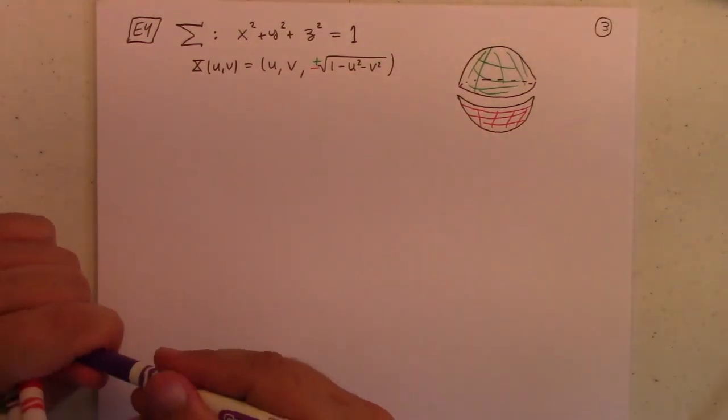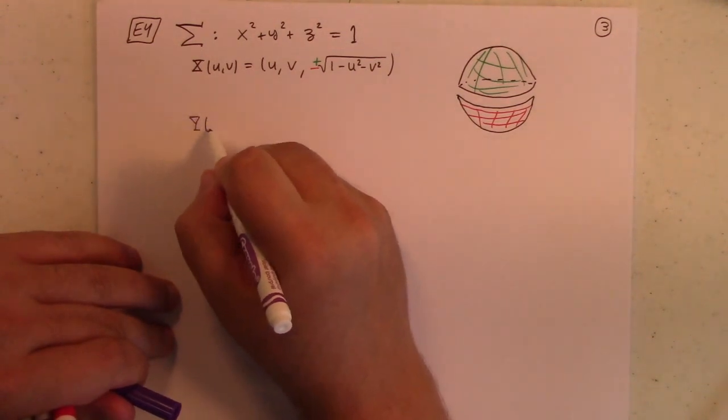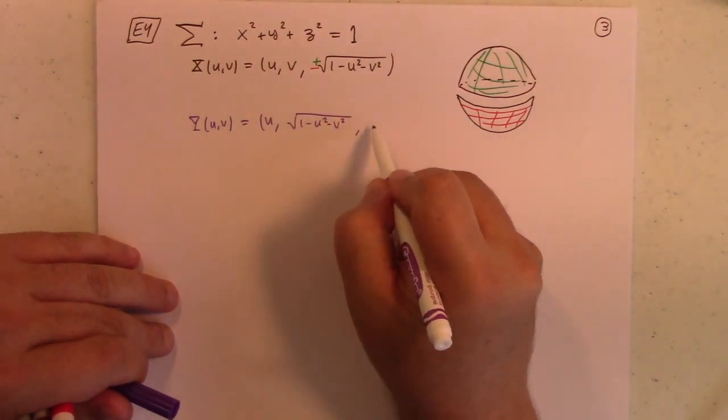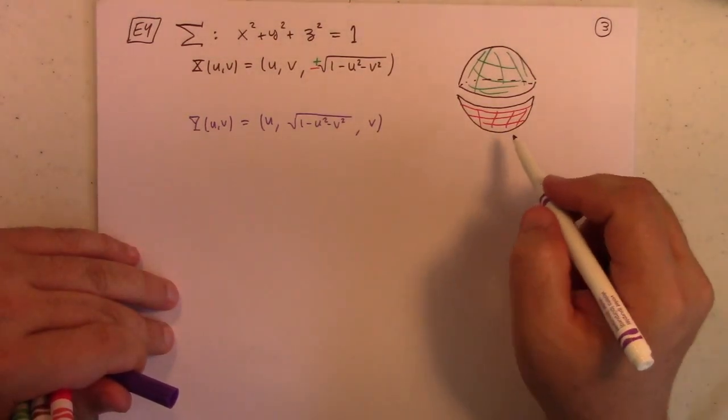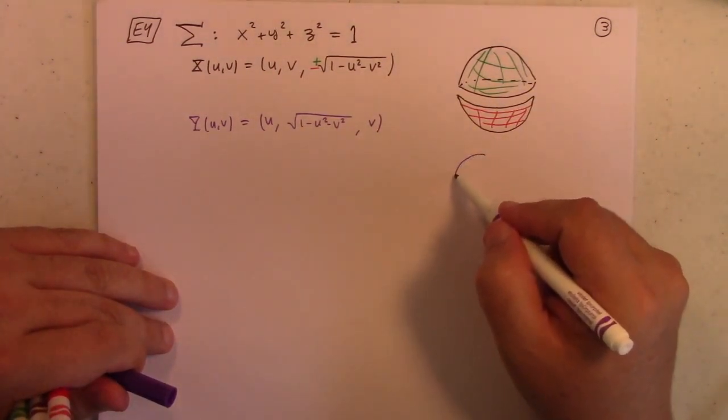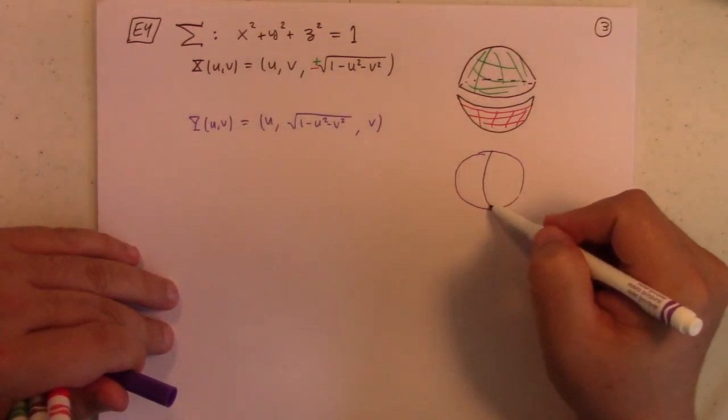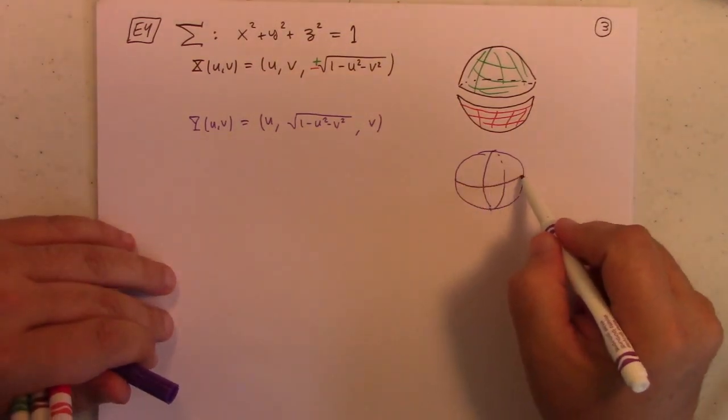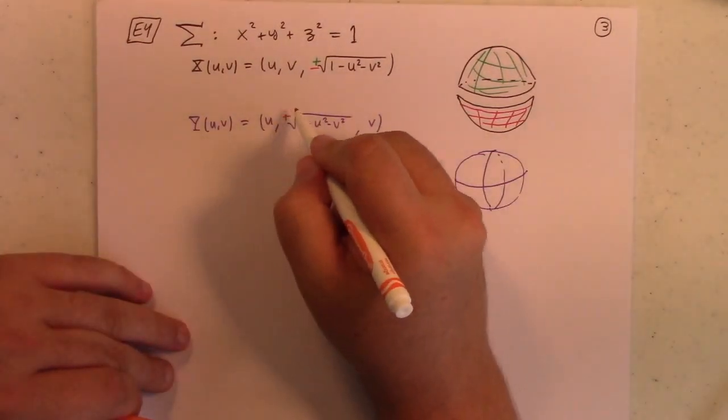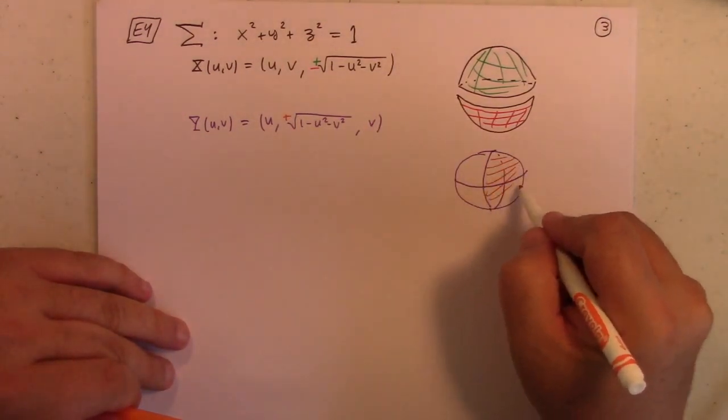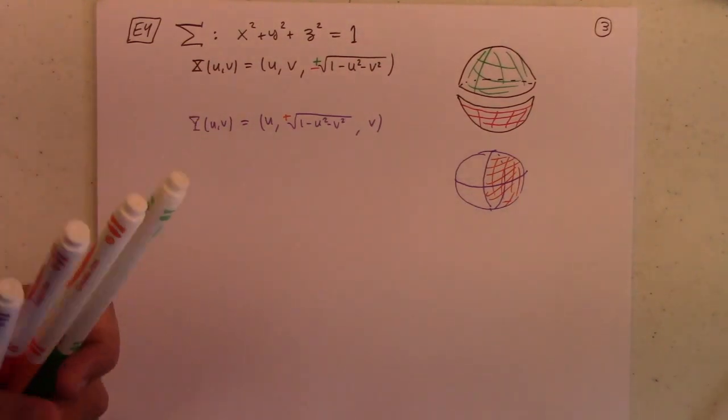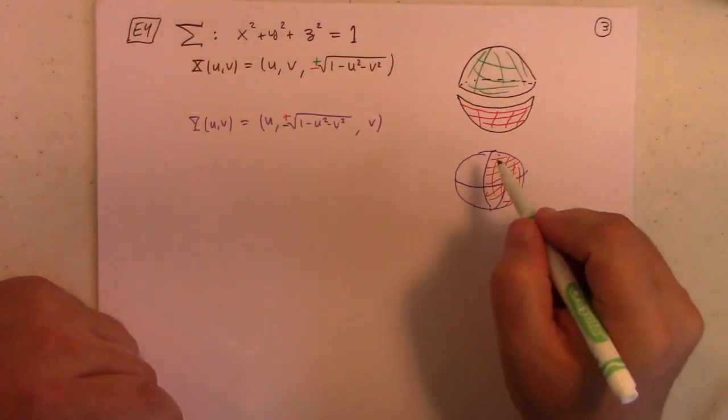You could also look at another patch, say, y of uv equal to u square root of 1 minus u squared minus v squared v, and that would give you, let's see, I'm messing with y here. So, this, with the plus, would be like, the place where y is positive. This half, and the minus, would be the negative half.